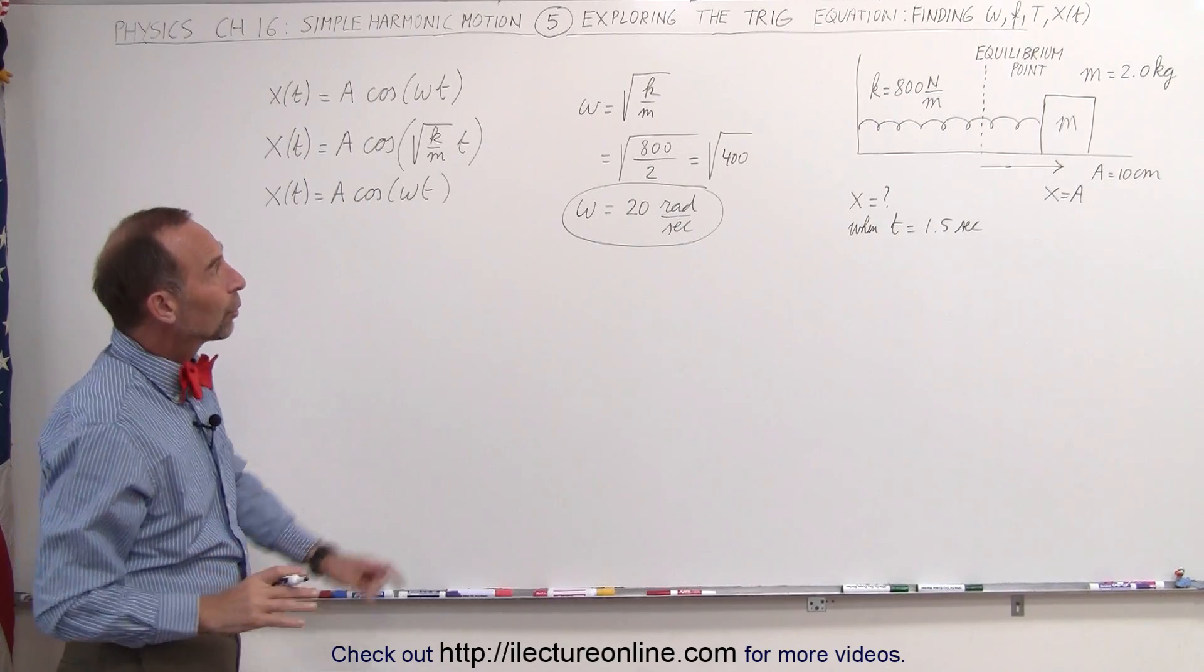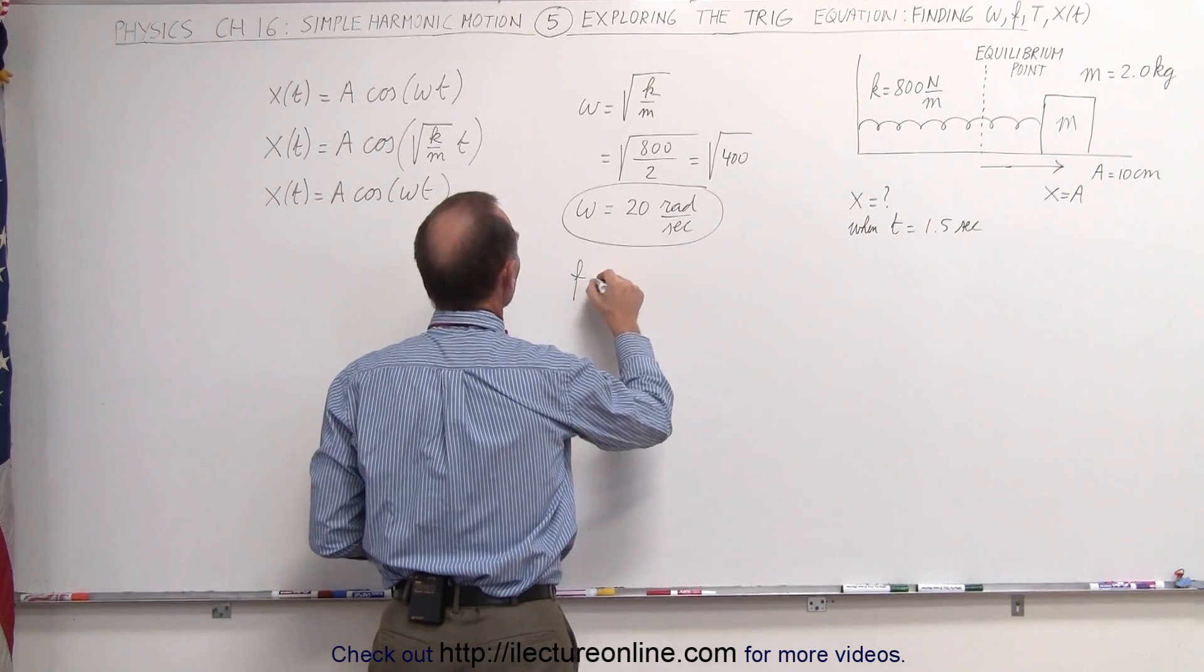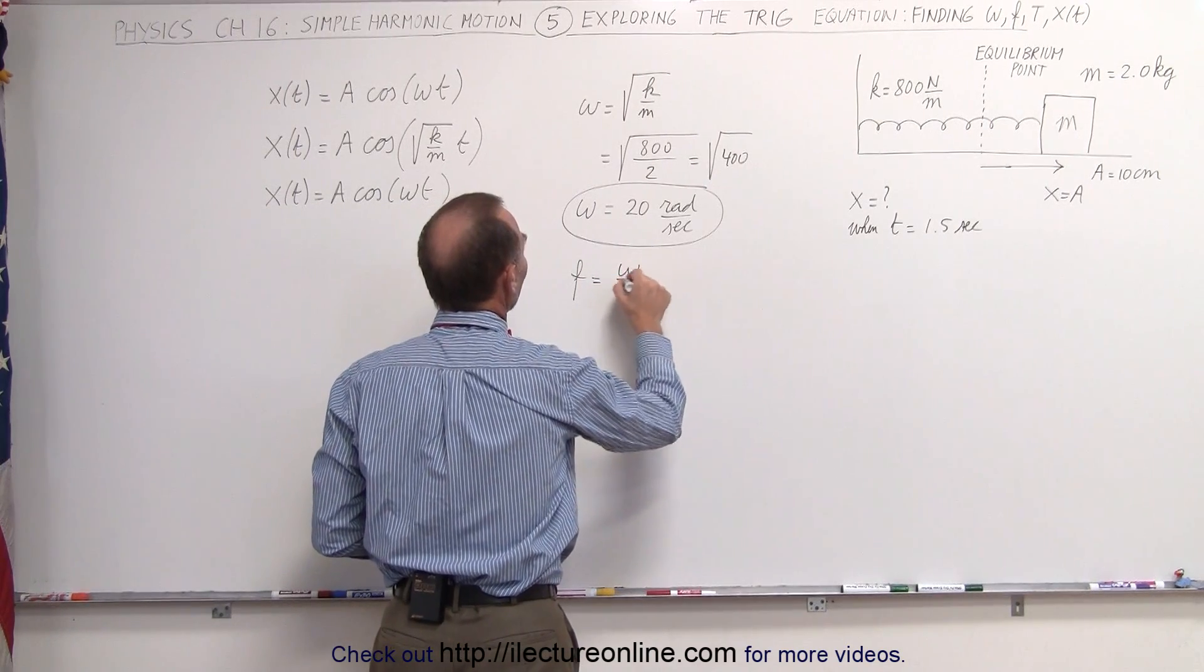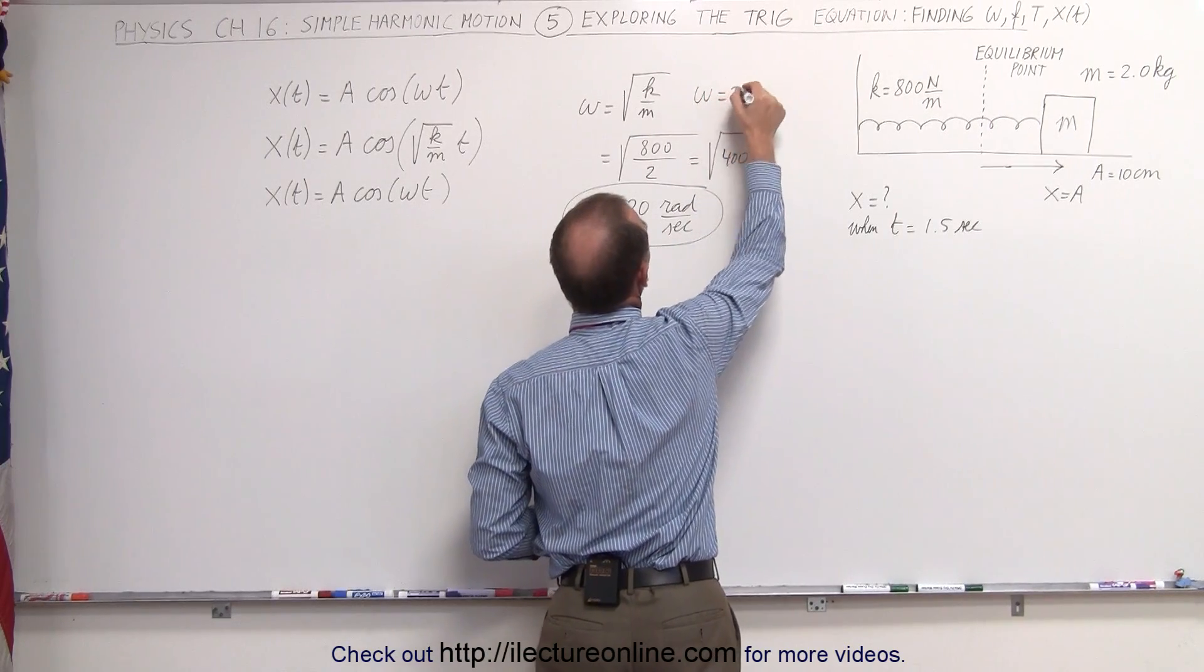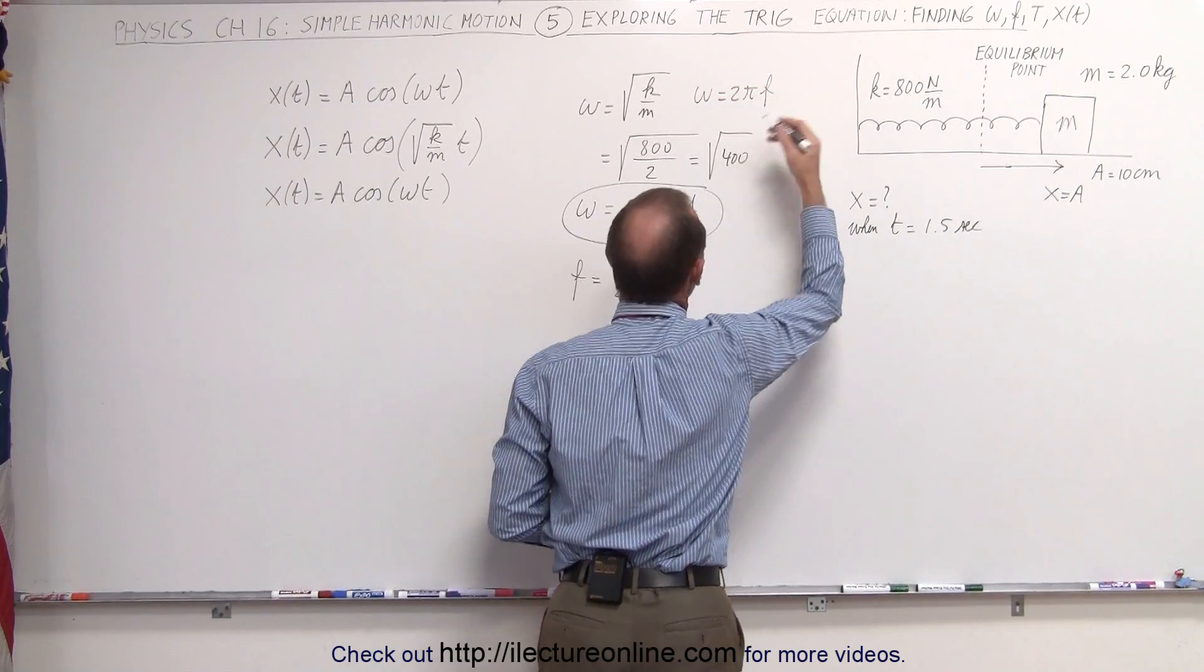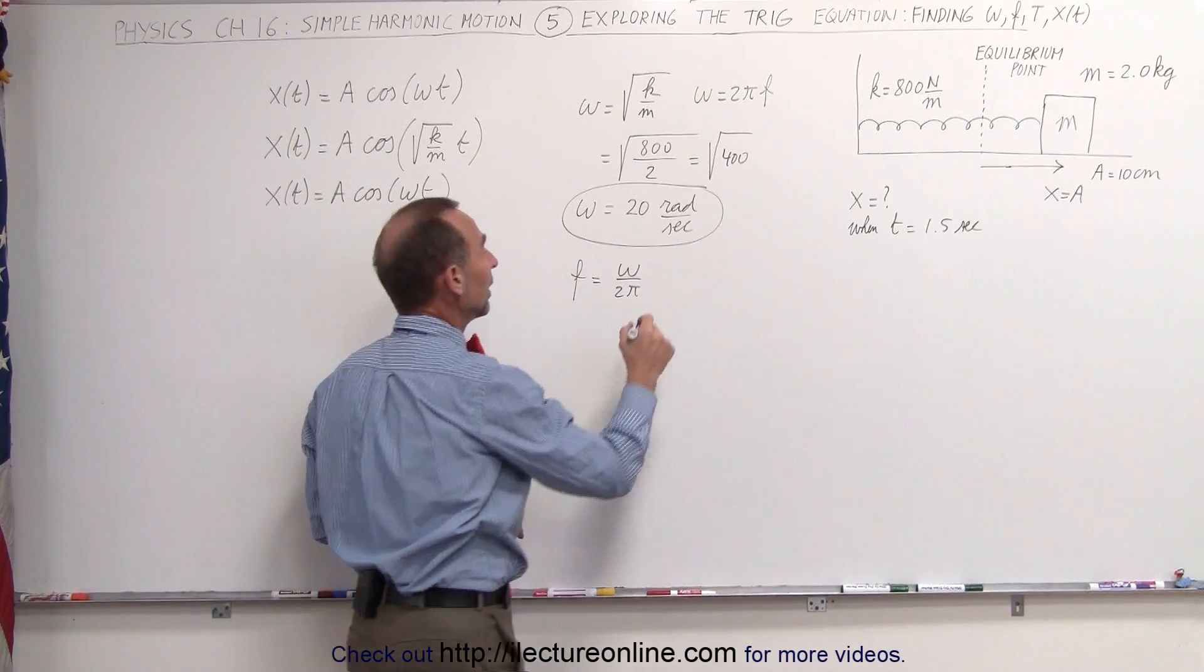The next one we're going to find is the actual frequency, the frequency of oscillation. We know that f equals omega divided by 2 pi, that's because omega can be defined as 2 pi times f. So f is omega divided by 2 pi, which is 20 radians per second divided by 2 pi.